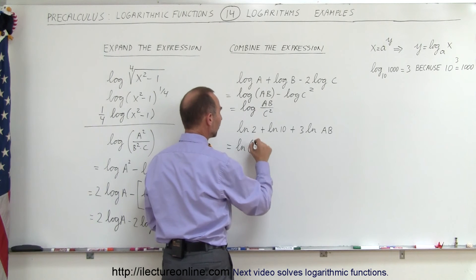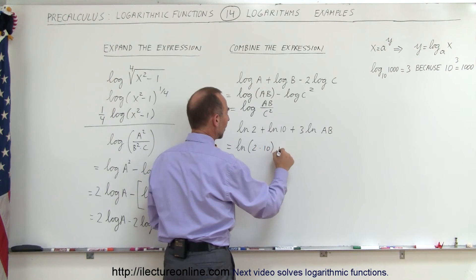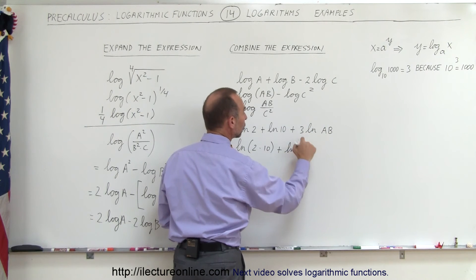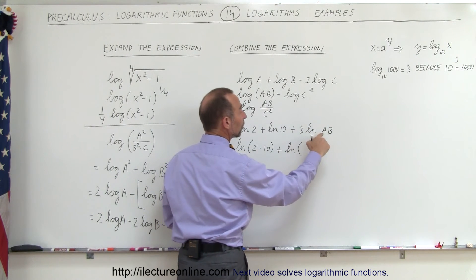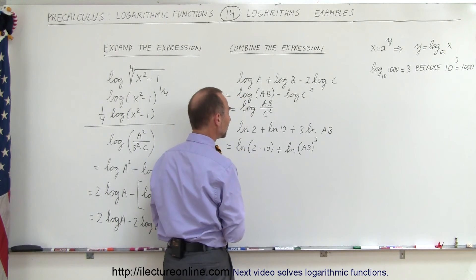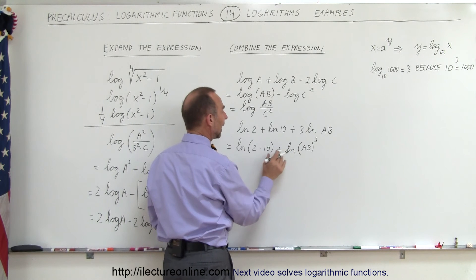This is equal to the natural log of two times ten, plus, take this and move it as an exponent up here, the natural log, and notice that this becomes the exponent of both a and b, so it would be a times b to the third power, and then we can go ahead and say,